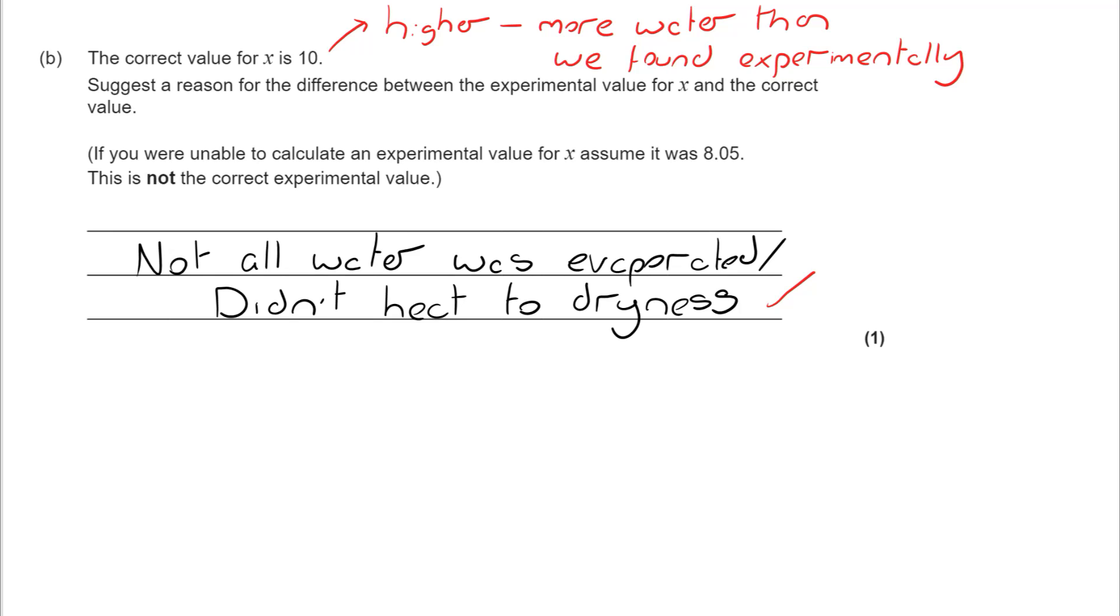You can heat to constant mass. So you heat it, you take the mass, you heat it again, and you take the mass again. If the mass has gone down, you carry on heating. If the mass stays the same over time, that's a really strong indicator that all of the water has evaporated.